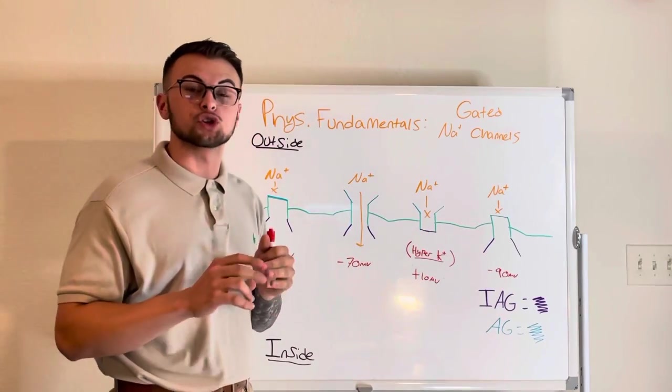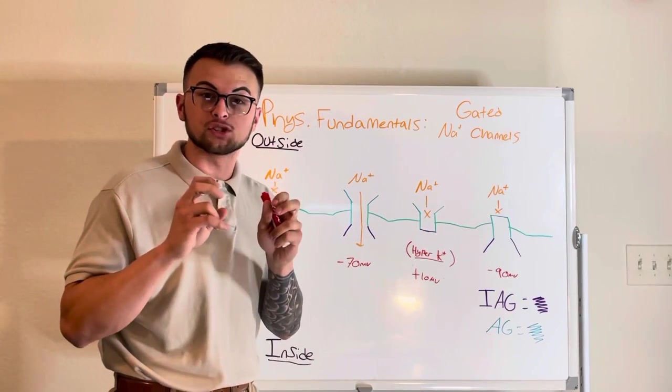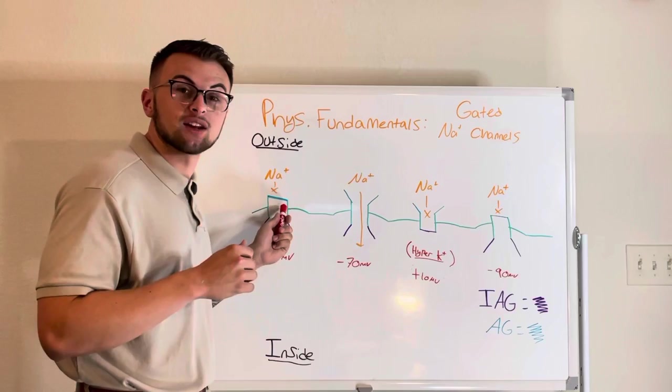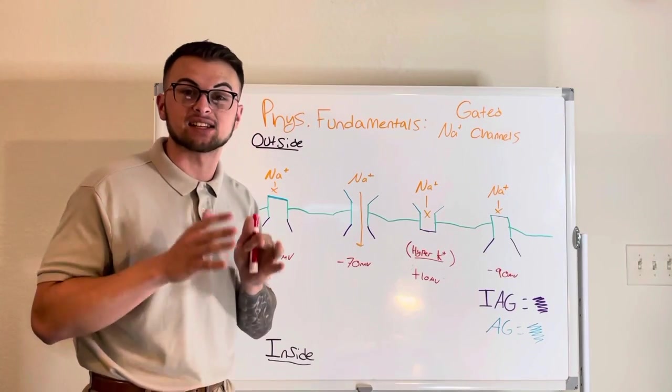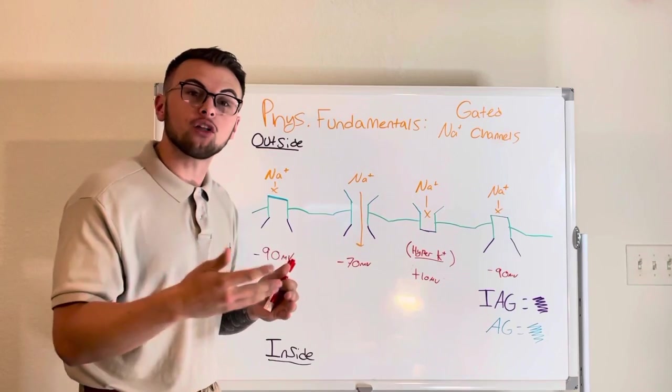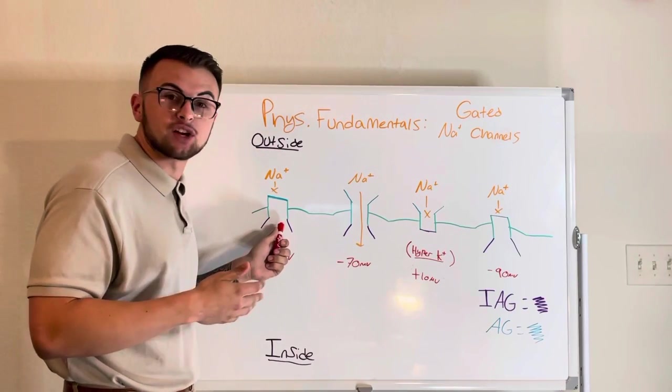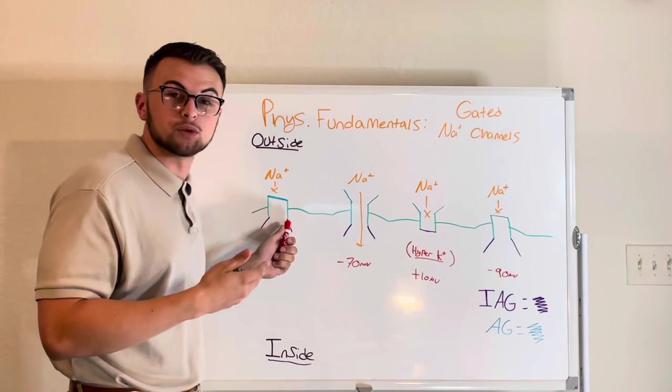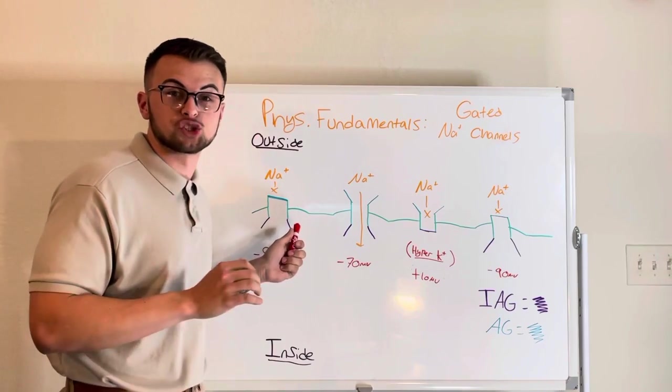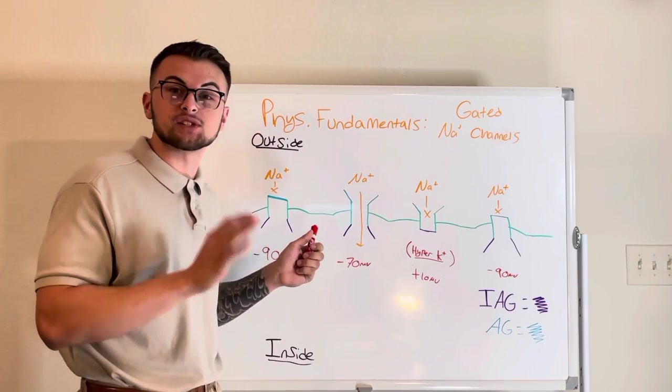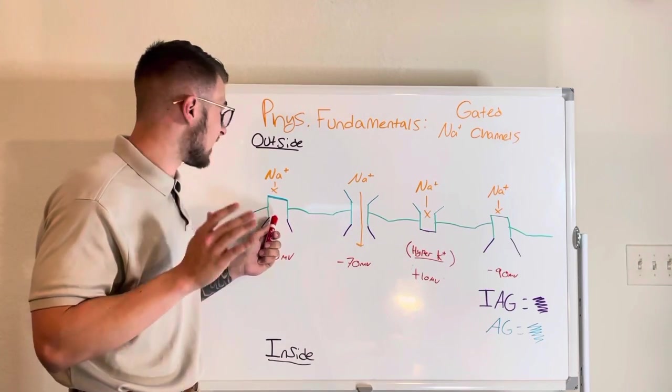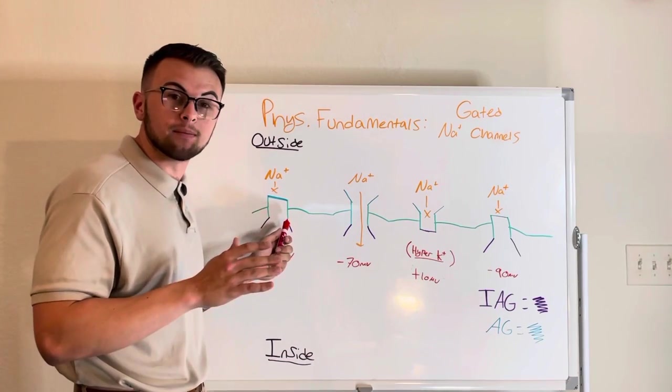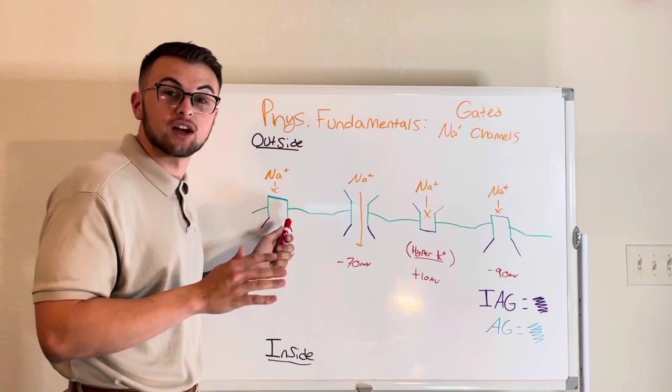The two gates are controlled by two brothers. The activation gate, or AG brother, is very fast at his job. On the other hand, the inactivation gate, or IAG brother, is slow at his job. In the resting position, the AG gate is closed and the IAG gate is open. This is when our cells are at around negative 90 millivolts.